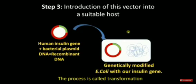The third step is the introduction of this recombinant plasmid into a suitable host. There are different gene transfer methods by which we can introduce our vector into a suitable host using physical, chemical, or transformation methods. Physical methods include electroporation, microinjection, and liposome-mediated gene transfer. Chemical gene transfer methods include calcium chloride-mediated or polyethylene glycol-mediated transformation.